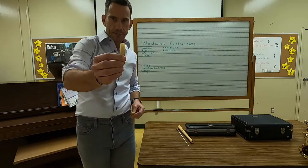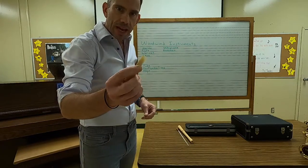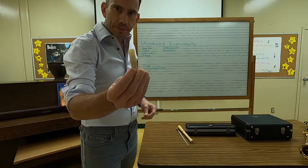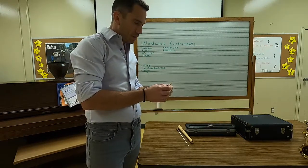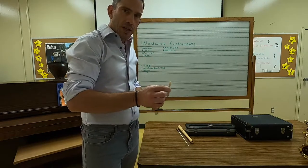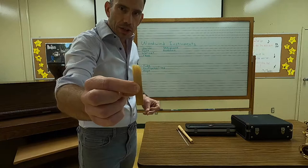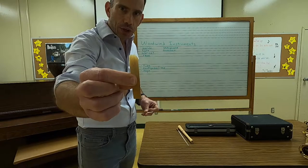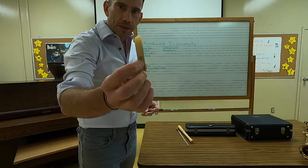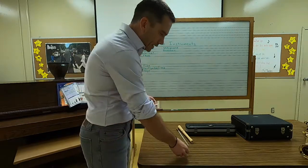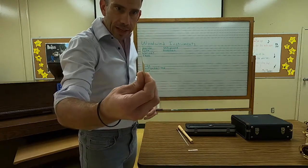Here's what reeds look like. Some of the woodwind instruments have these. After a while, the reeds start to chip away and they start to break — but that's not a big deal. You just throw it away and get a new one.